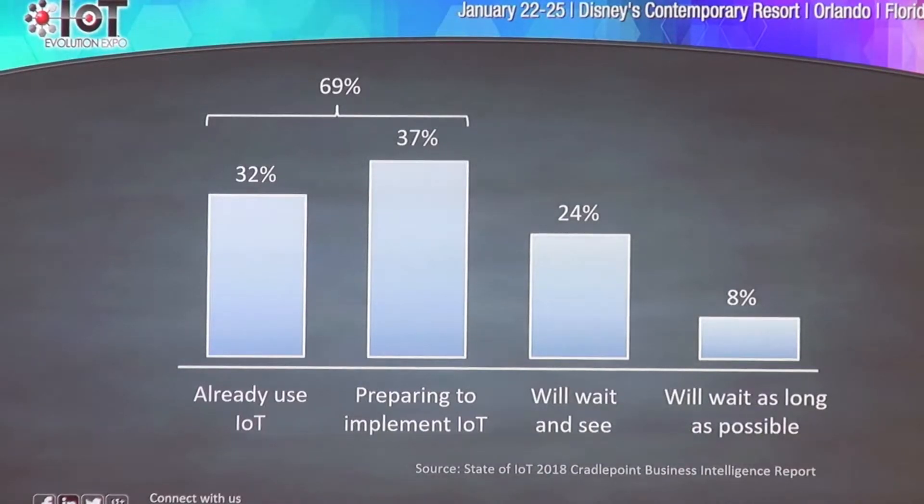It was really encouraging to see that IT departments are optimistic about IoT. If you look at adoption, 32% say they have already implemented IoT solutions on their networks, and another 37% say they plan to within the coming year. So 69% of IT departments at these enterprises are actively involved in IoT today. And this is self-definition — we didn't tell them what IoT was.